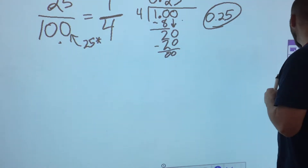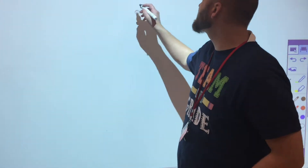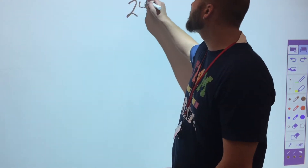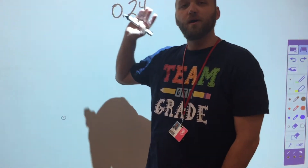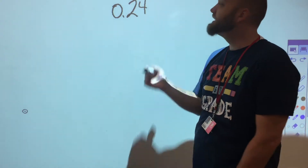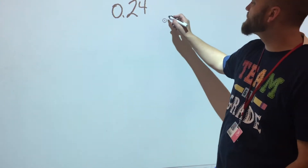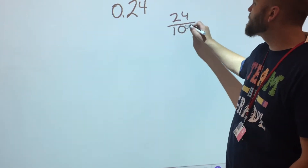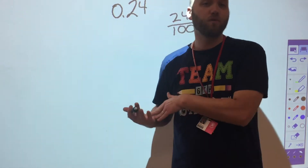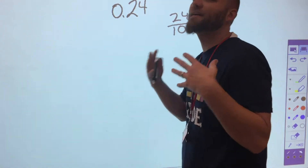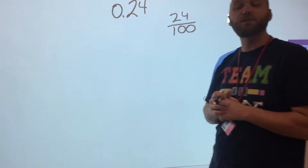When turning a fraction into a decimal, you can either turn it into a division problem or flip it into an equivalent fraction you know in decimal form. Going the other direction: if I have twenty-four hundredths and want to make it a fraction, I say the decimal name out loud — twenty-four hundredths — and that immediately gives me twenty-four over one hundred. This is why it's important to call our decimals by their proper names: twenty-four hundredths, twenty-five thousandths — it translates directly into a fraction.